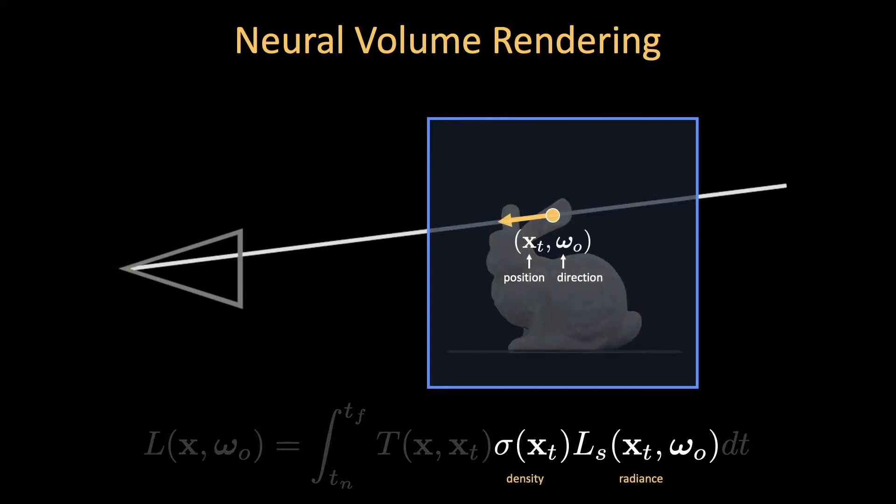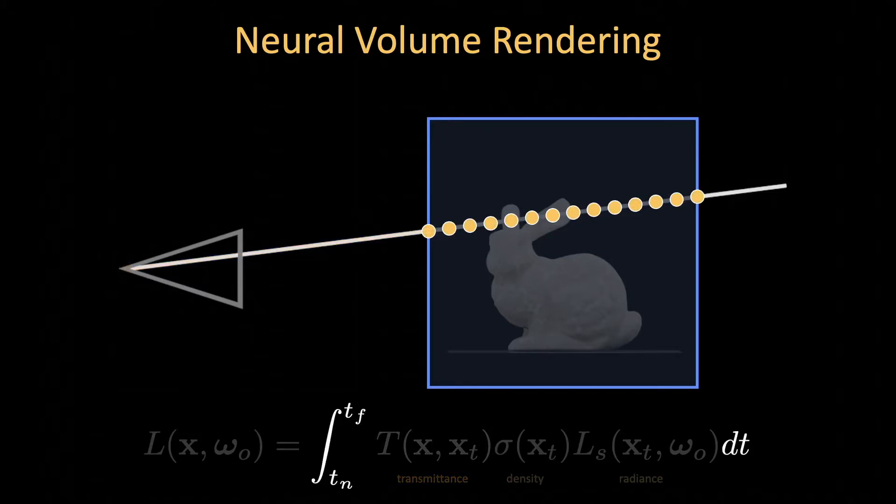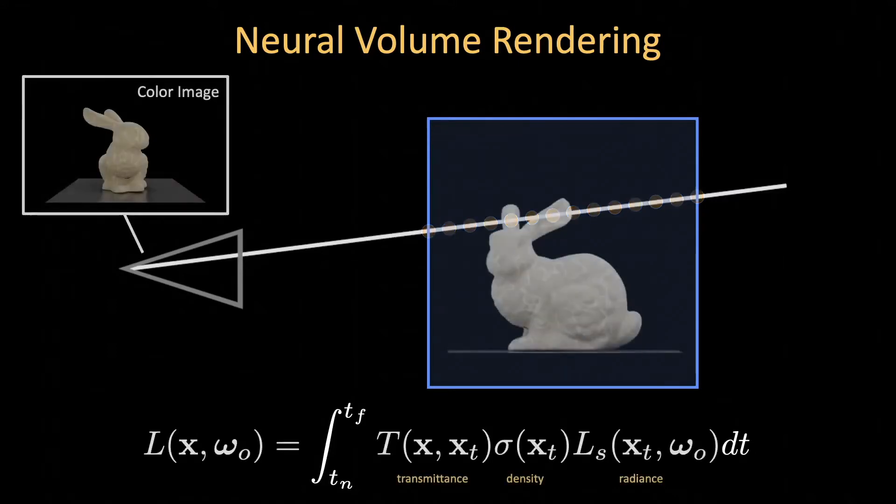given by the product of radiance and density. We then scale this result by a transmittance term that describes the proportion of this light that will reach the camera. And finally, we repeat this procedure for all points along this ray, and sum up their contributions. After repeating this procedure for all pixels in our camera, we obtain an image of our scene from our camera's perspective.